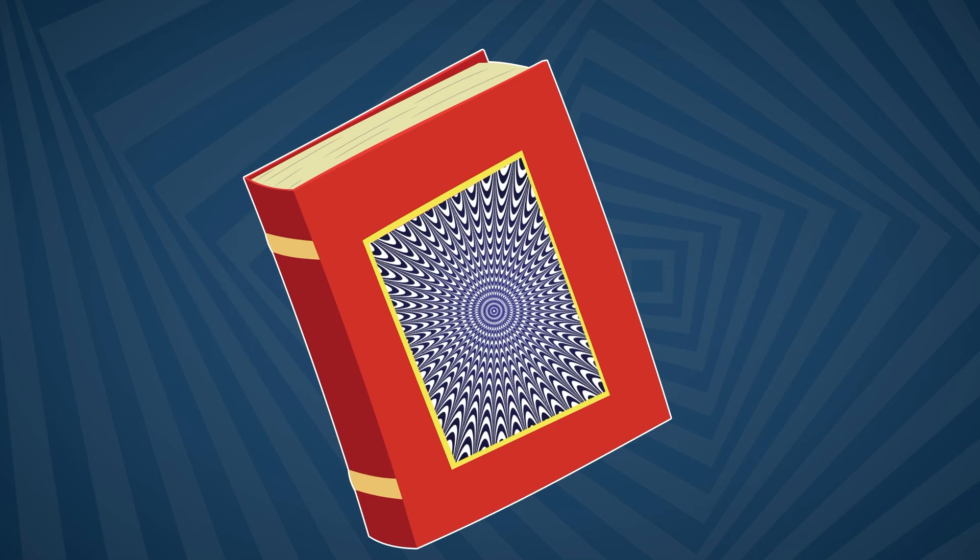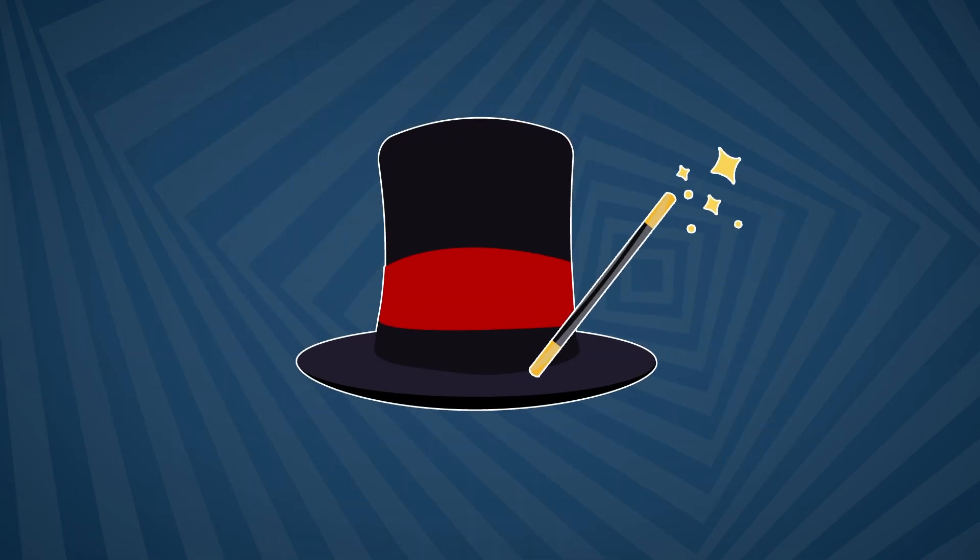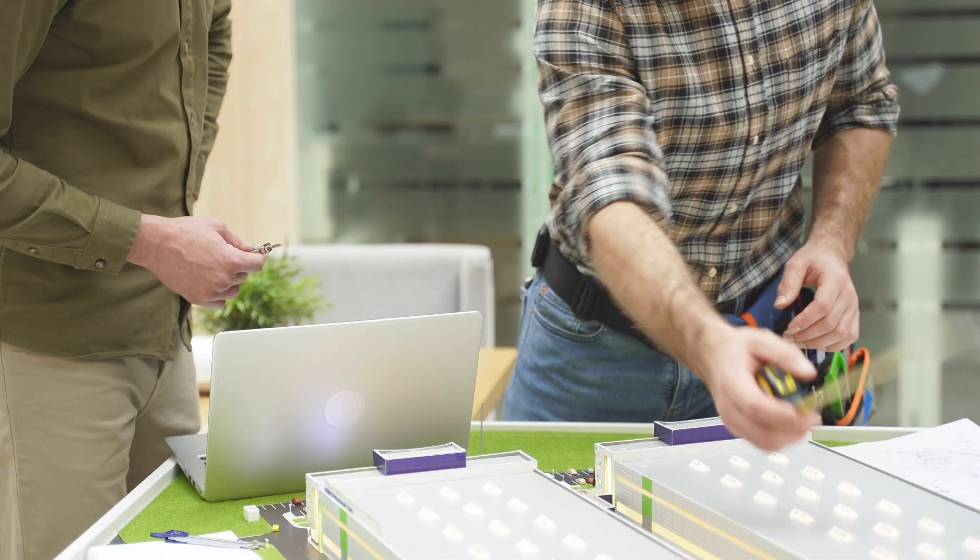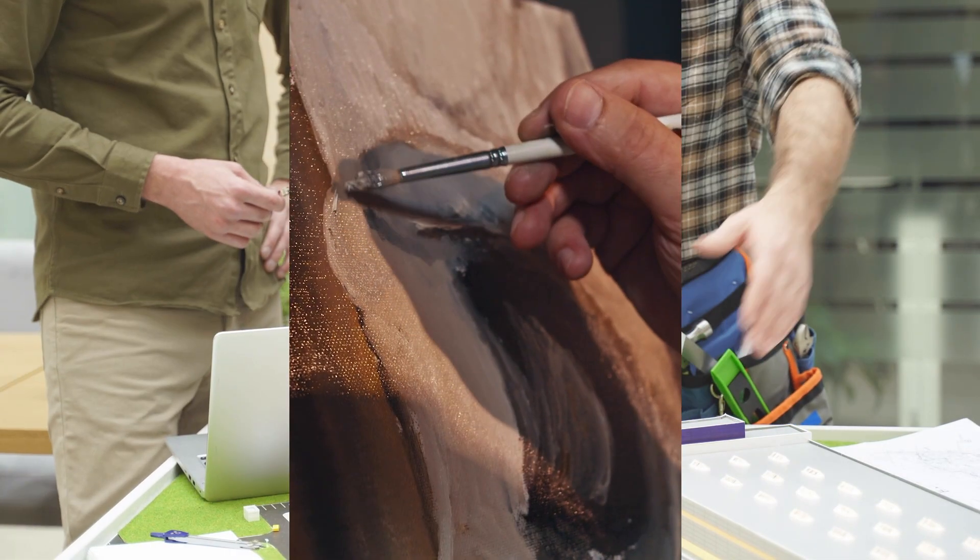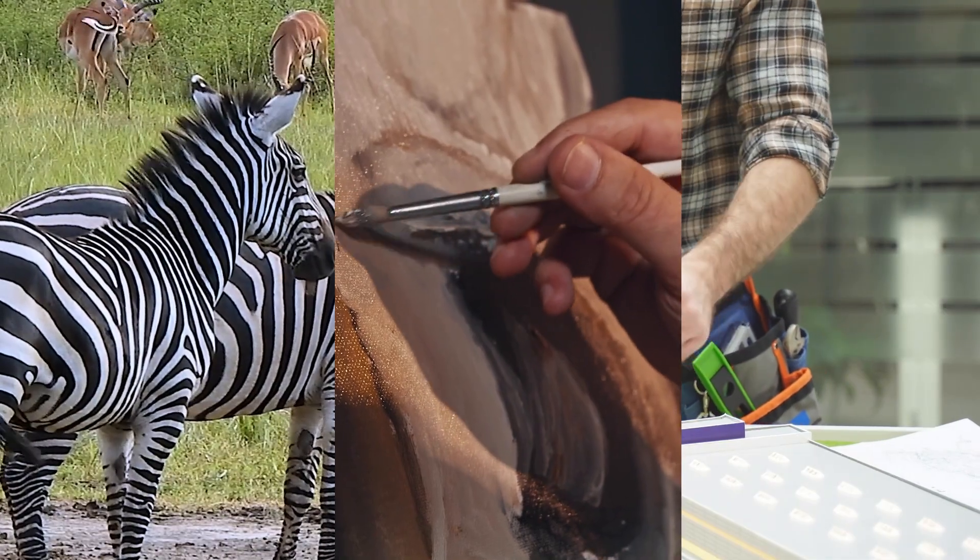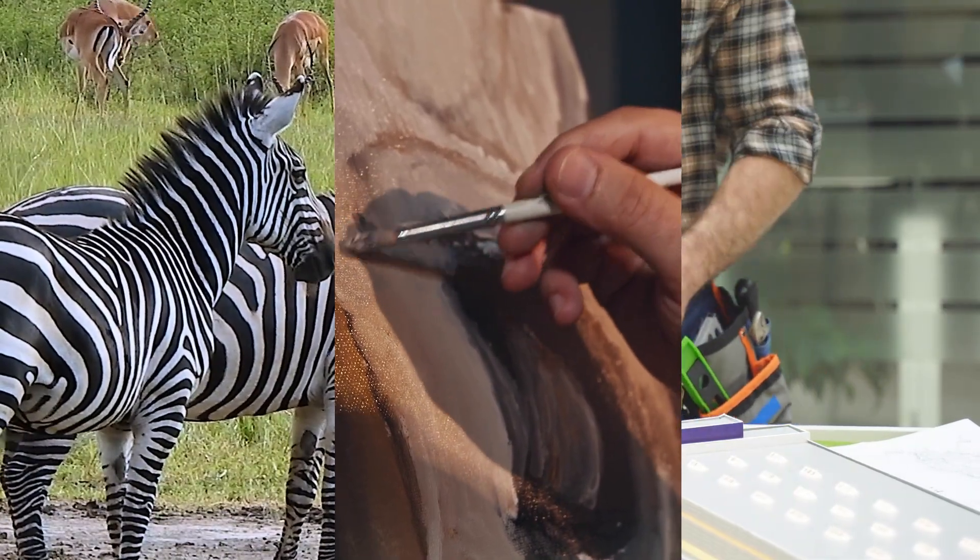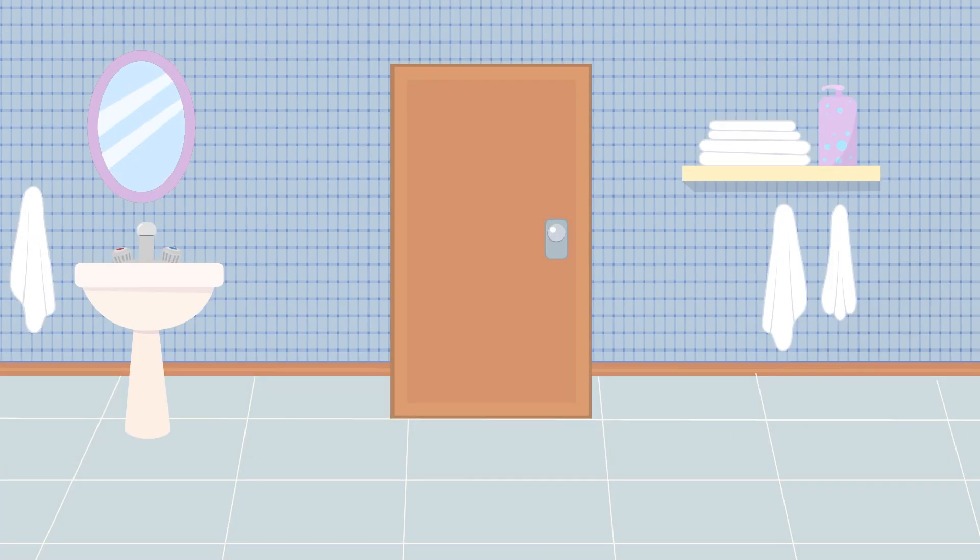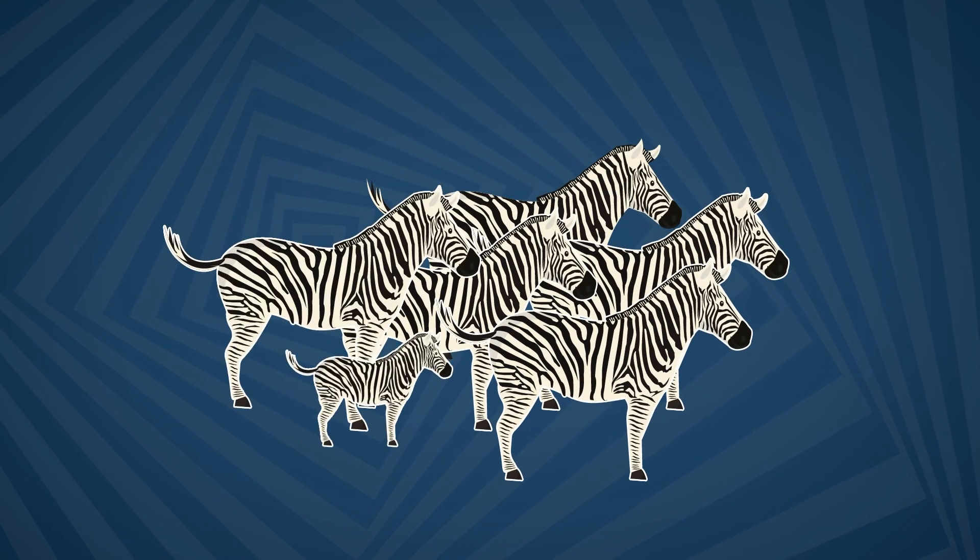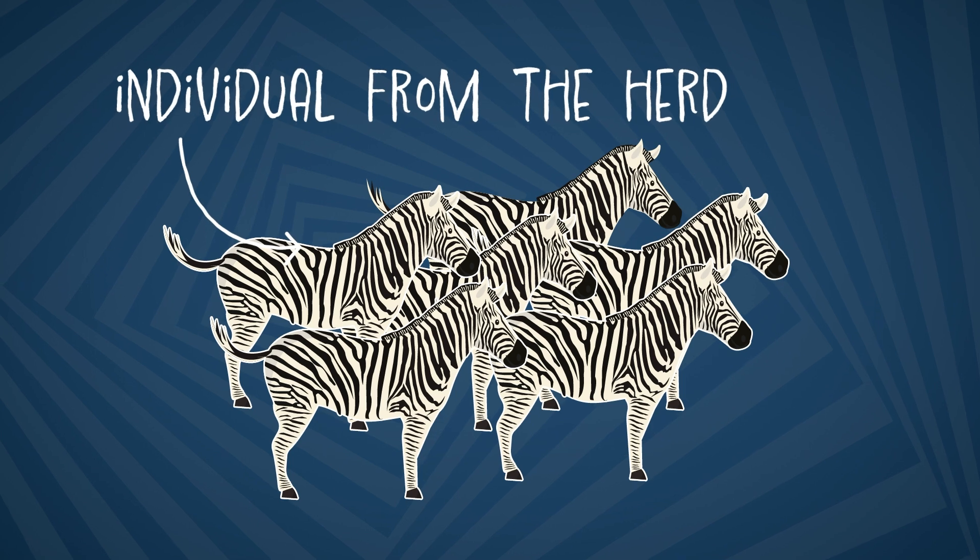Optical illusions aren't just in art books or magic shows. They're everywhere. Architects, artists, and even nature use optical illusions to create effects. For example, smaller tiles can make a room appear bigger, and zebras' stripes can create an illusion that makes it hard for predators to single out an individual from the herd.